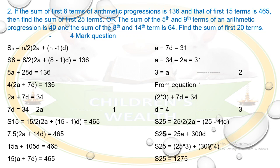So S₂₅ = 1275. This is the easiest way to solve the problem, and from this solution you can grab 4 marks. If you have any doubt, write it in our comments column and we will get back to you. Thanks for watching.